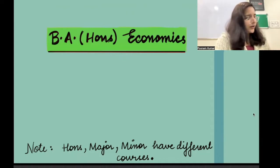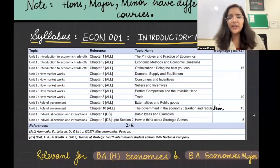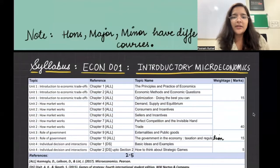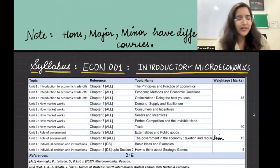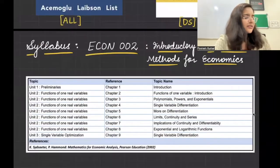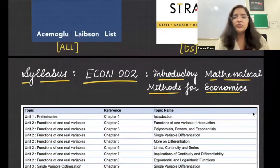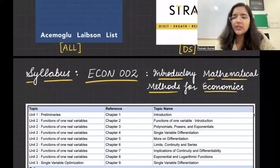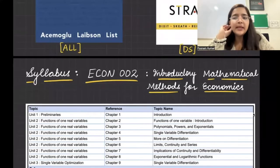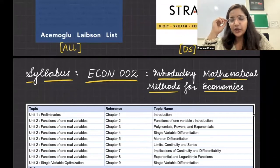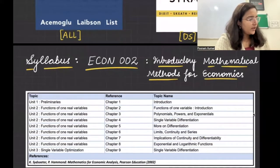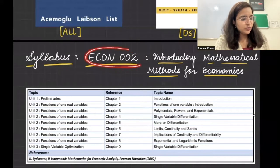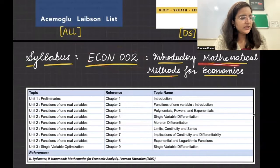Let's start talking about, we talked about the introductory microeconomics course in the last video. If you have not seen that, I'll put it somewhere here, you can just check it out. And now let's start to talk about our second course which is Econ002 which is Introductory Mathematical Methods for Economics. This course was there in Delhi University and in your first semester previously, and this time also it has remained.